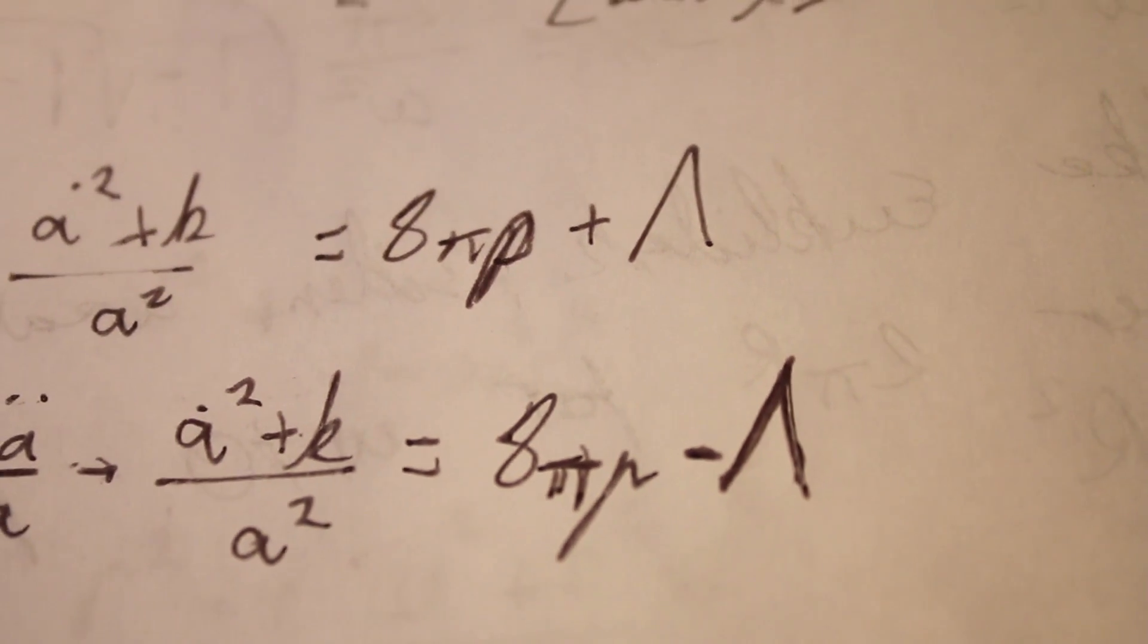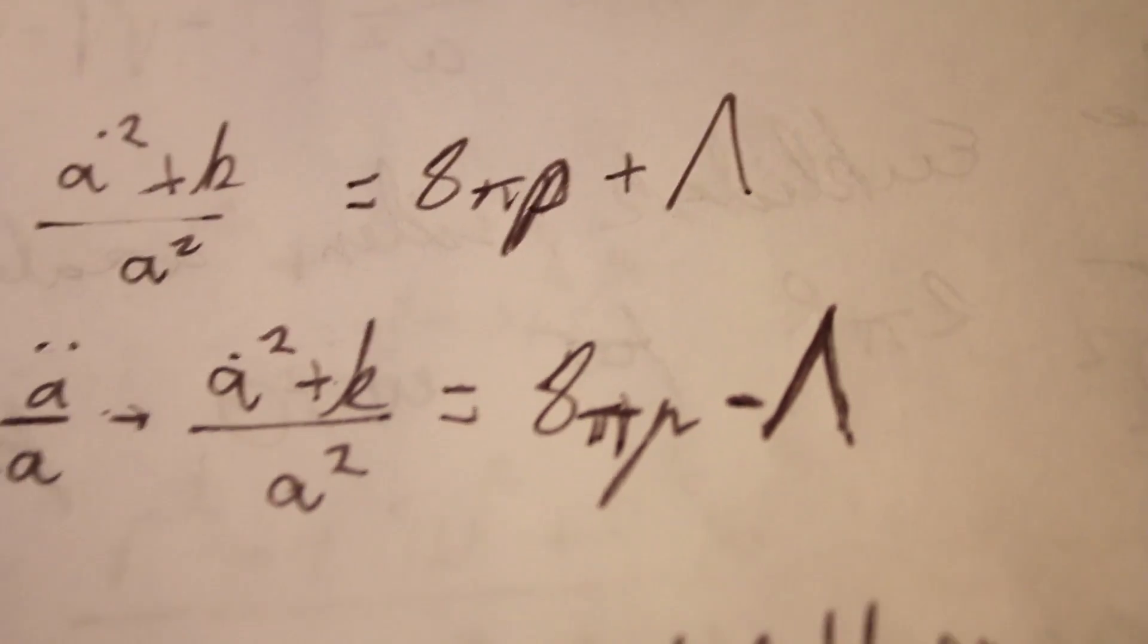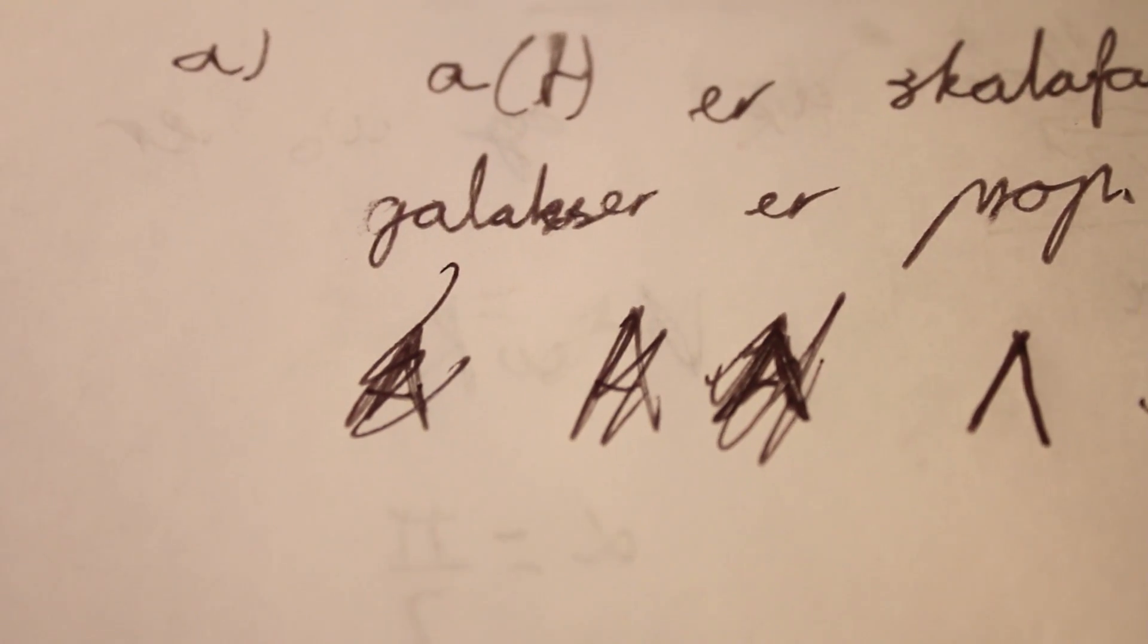There's the symbol for the cosmological constant. It's an upside down V. I just keep drawing it as an A. It's really annoying.